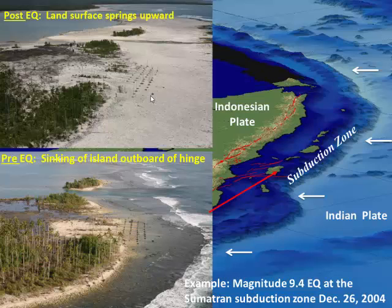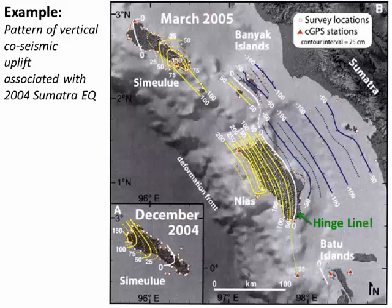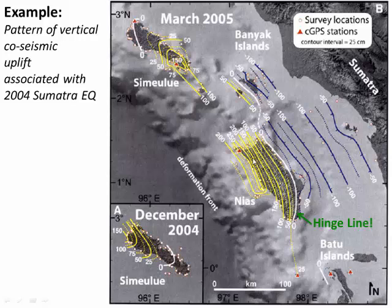This was a huge earthquake — a magnitude 9 earthquake. Looking at that in map view, I was part of a team that mapped out uplifted coral reefs along these islands back in the late 2000s. This map shows the magnitude of uplift on both sides of the hinge line. Here's the subduction zone offshore, and here's the hinge line in white. All the contours in yellow show areas that snapped upward in the earthquake, up to a maximum of 2.5 meters. All the areas in blue show areas that sank down during the earthquake.